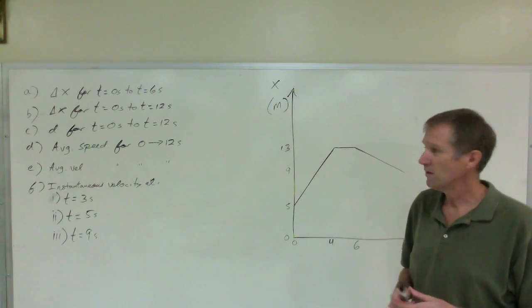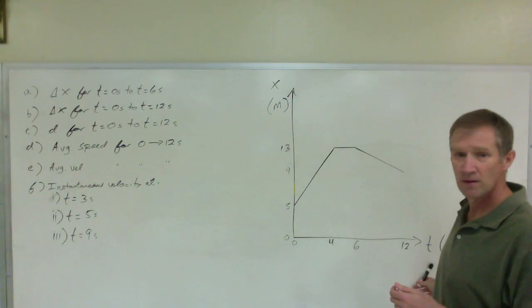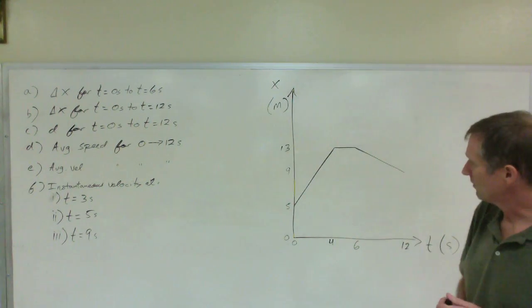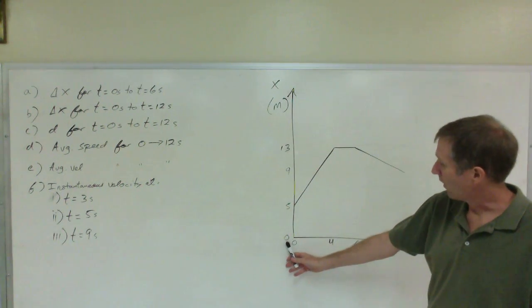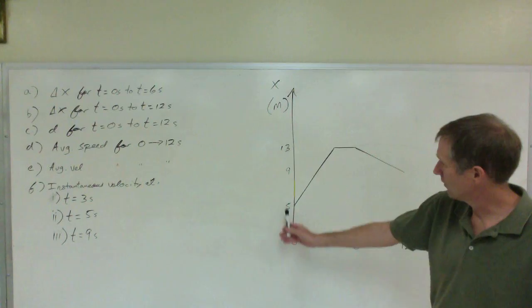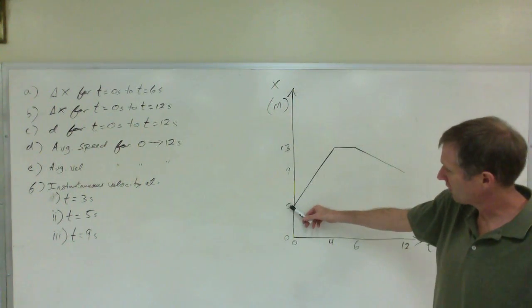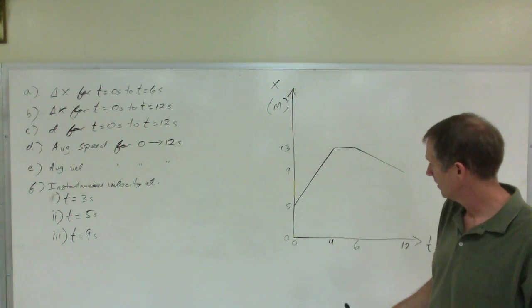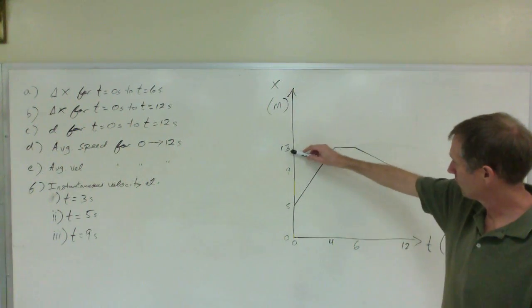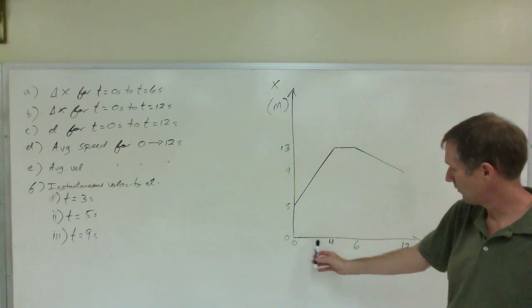What we have here is a position-time graph. Position in meters on the y-axis, time in seconds on the x-axis. The y-axis has position from 0 to 13 meters. The object starts at 5 meters and travels from 5 meters to 13 meters from a time of 0 to 4 seconds.